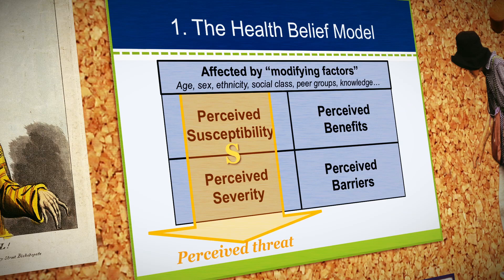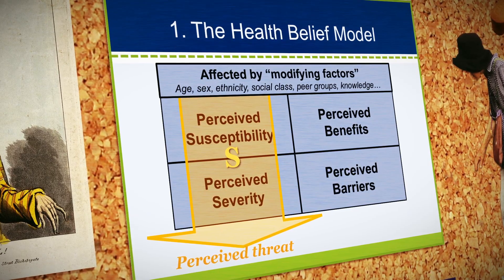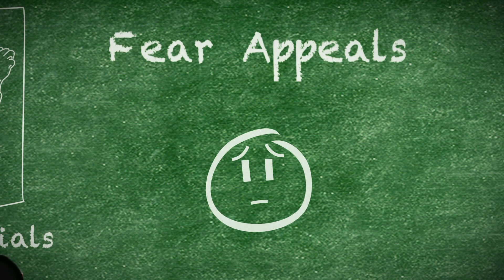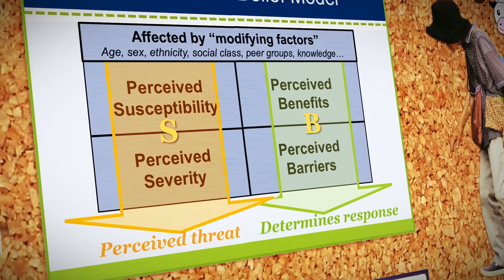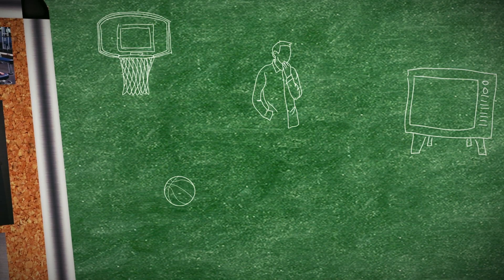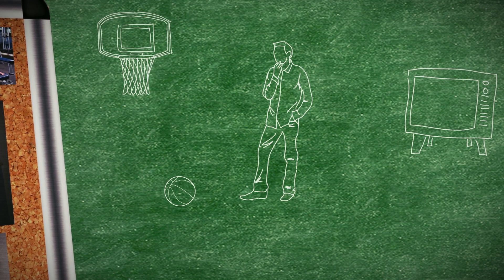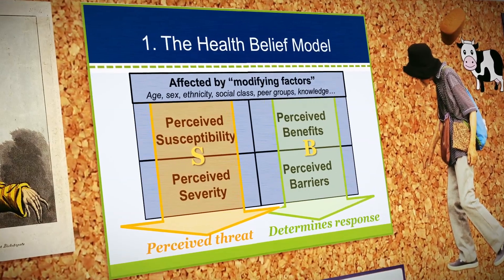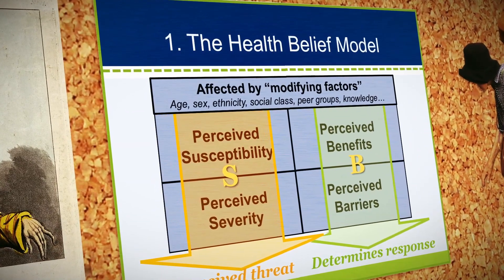This points to one goal for health promotion programs based upon the health belief model: creating realistic perceptions of threat in the target population. Strategies for increasing perceived threat could include educational materials to increase perceived severity or fear appeals to increase perceived susceptibility. Our evaluations of perceived benefits and perceived barriers combine to determine our response — we evaluate the pros and cons and determine whether there would be a net gain. This points to other tasks: clearly communicating benefits and developing strategies to minimize the barriers people may experience.